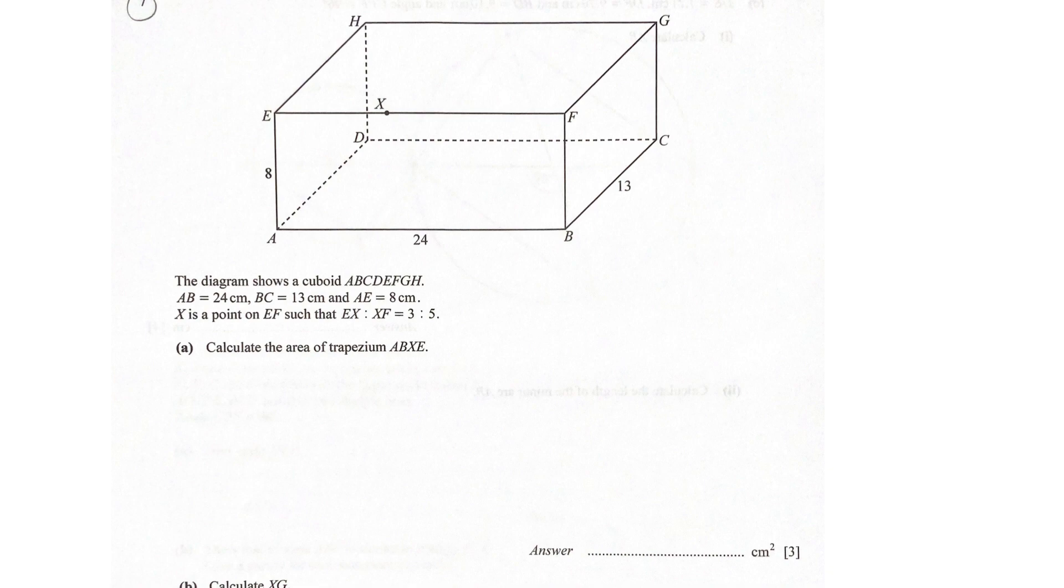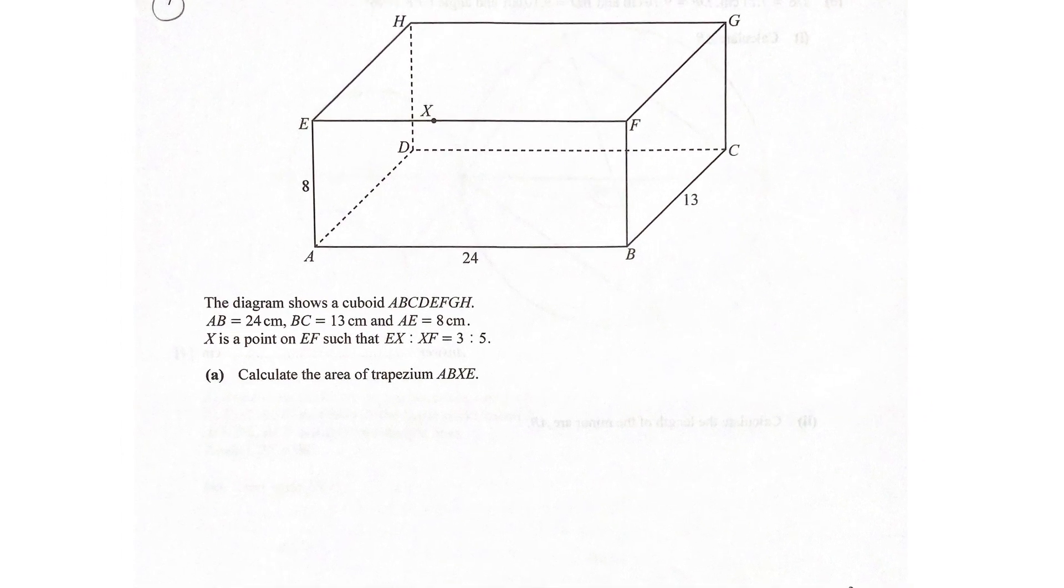So the diagram is a cuboid with 24, 13 and 8 cm as the sides. We have EX is to XF as 3 is to 5.